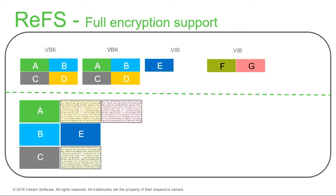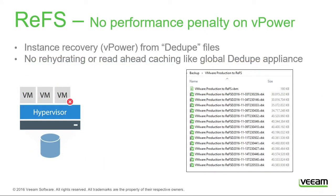Encryption is supported — even though files share block references, those blocks can still be encrypted. Also, starting up machines using vPower directly from these ReFS-backed fulls works without any performance penalty, even though the data is effectively space-saved or deduplicated.